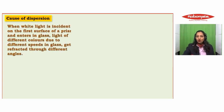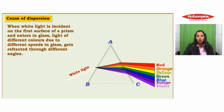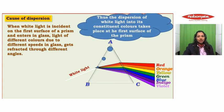Let us see the cause of dispersion. When white light is incident on the first surface of a prism and enters the glass, light of different colors, due to different speeds in the glass, gets refracted through different angles. The dispersion of white light into its constituent colors takes place at the first surface of the prism.